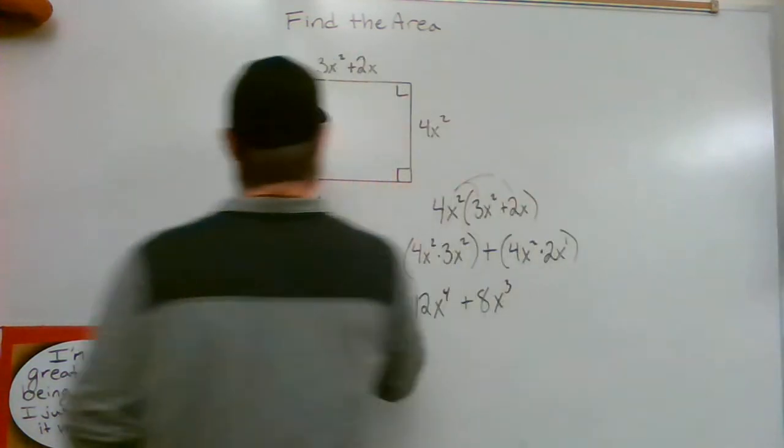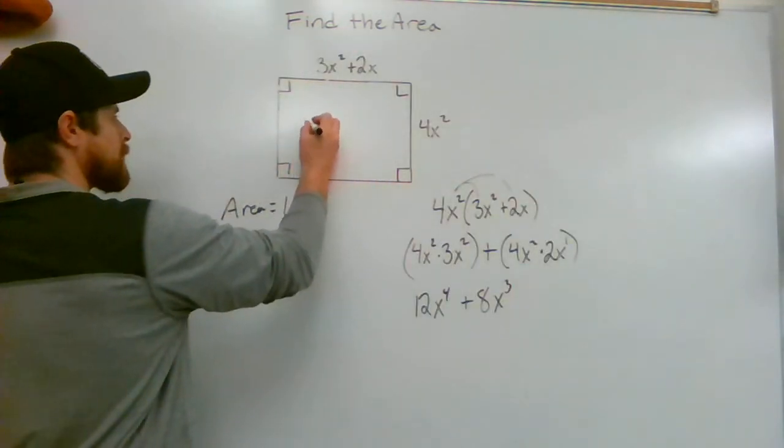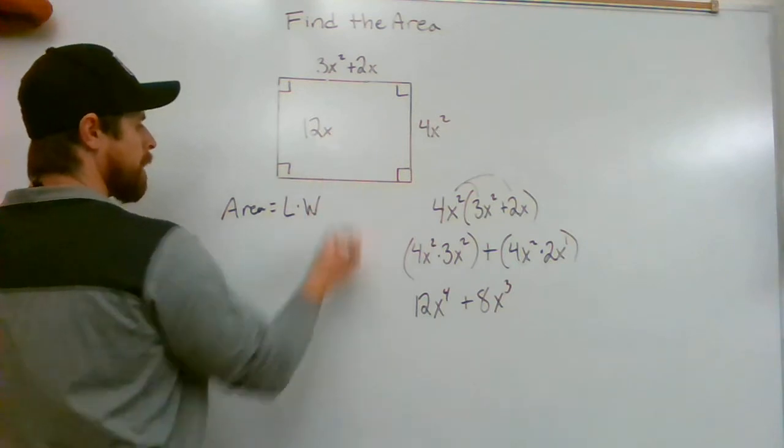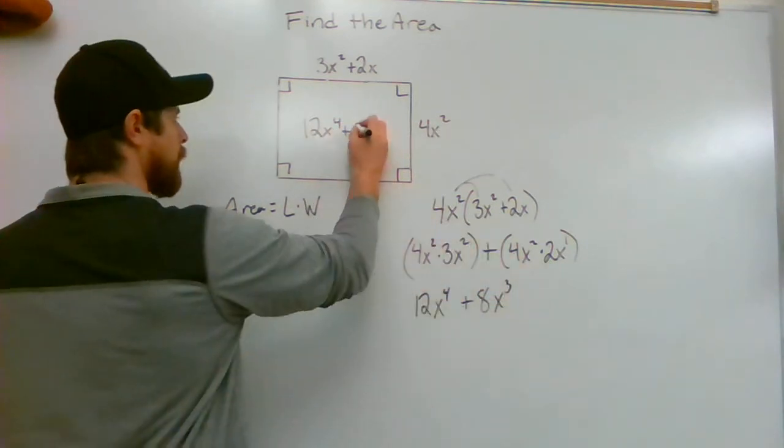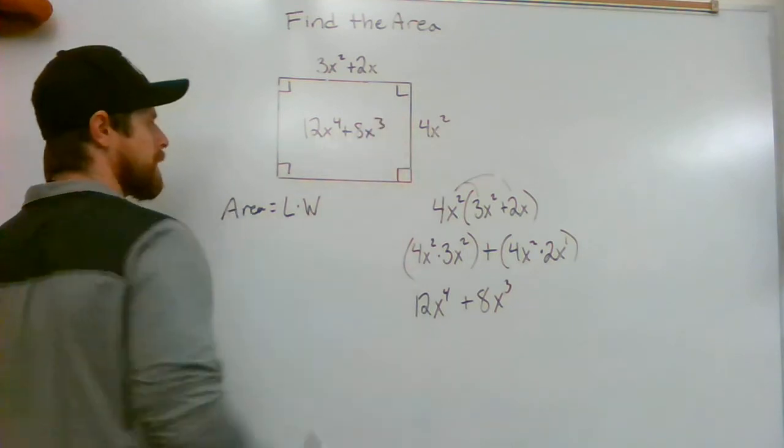So let's go over here, copy down our answer. Our area is 12x to the 4th plus 8x to the 3rd. And that would be the area of this rectangle.